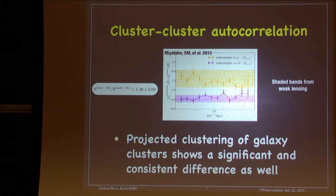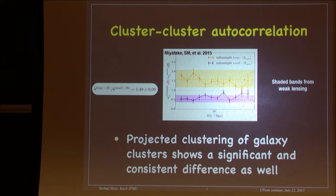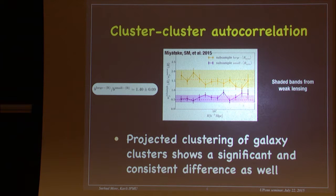I have not checked the flattening of the satellite distributions themselves, but I have definitely looked at the BCDs and their shapes. In principle we could also look at the ellipticity of the satellite distribution, similar to what other groups have done.